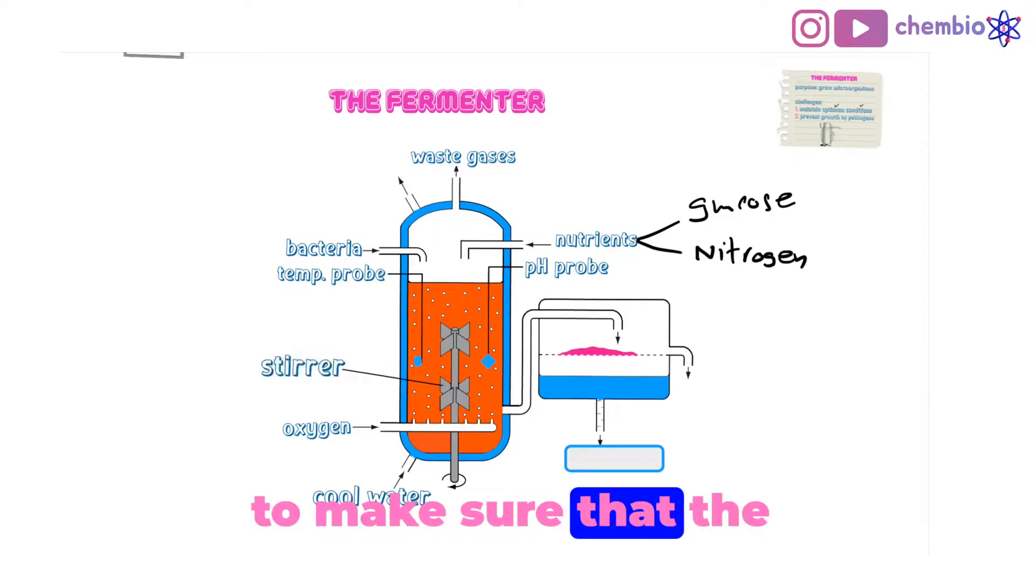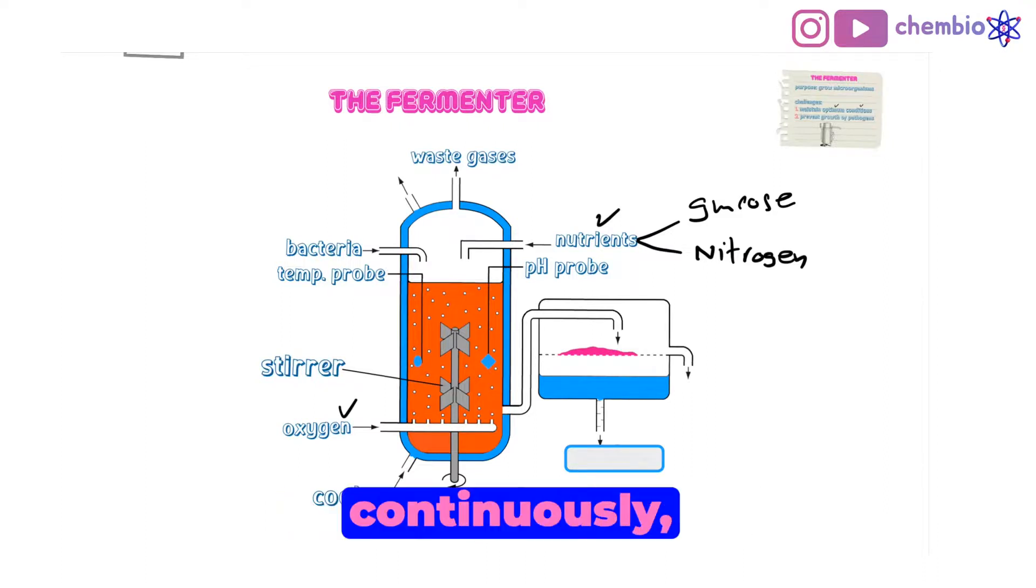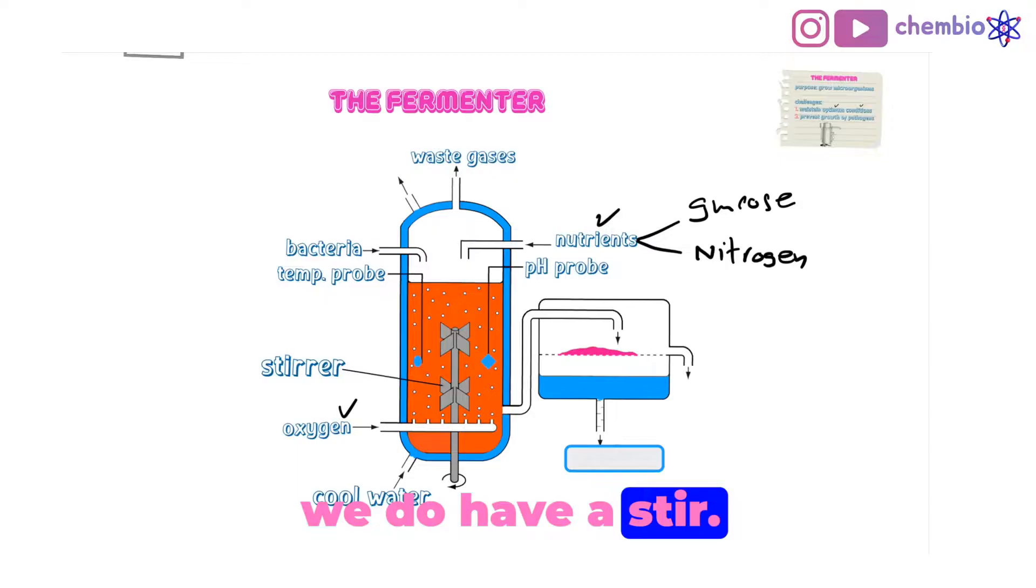To make sure that the components, the nutrients, the oxygen and the bacteria are mixed continuously, we have a stirrer. That stirrer helps to distribute the heat around the fermenter equally and to mix the components.